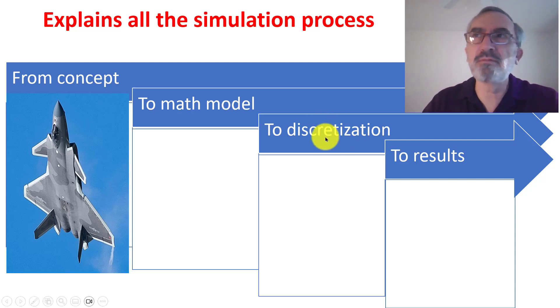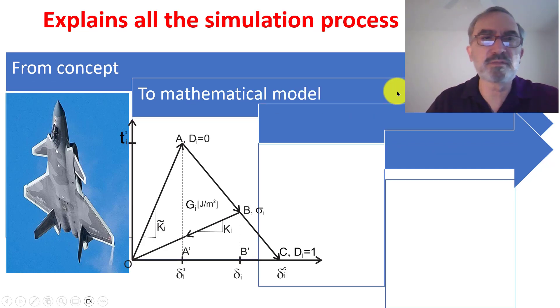And once you do that, then you solve the discretized problem. In this case, using Abacus. And once you do that, you have results. And when you have results, then you can see if the results meet the design criteria or not. If they don't, then you change the design. So that's the process. All this process is explained in this textbook.